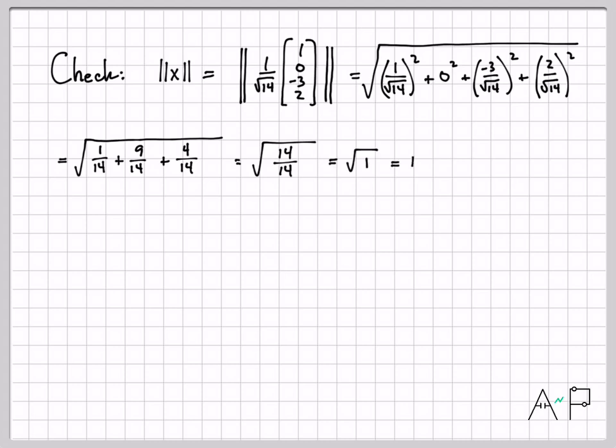The square root of 1 is indeed 1. So we've established that x does indeed have unit length, and the direction is in the direction of v because it is in the exact same direction of v. It's just a scalar multiple of the vector v.